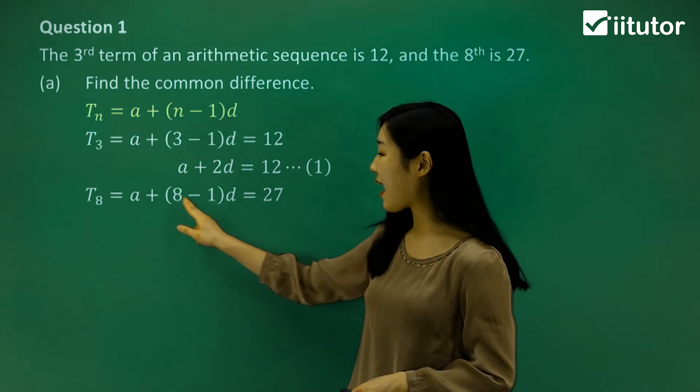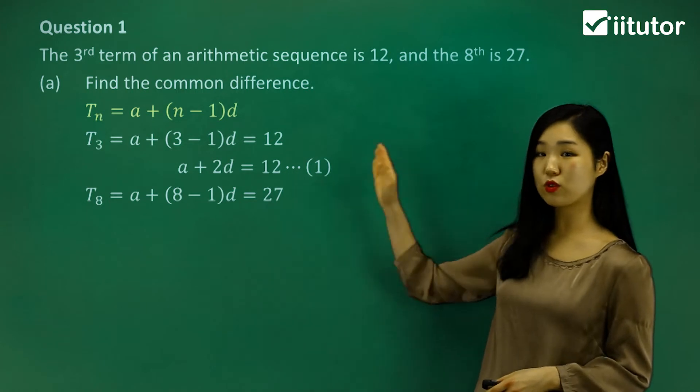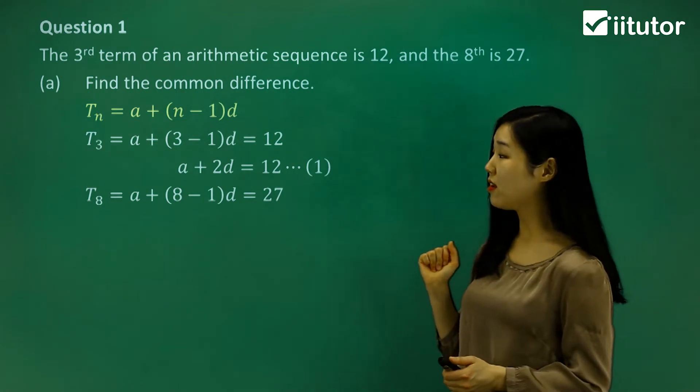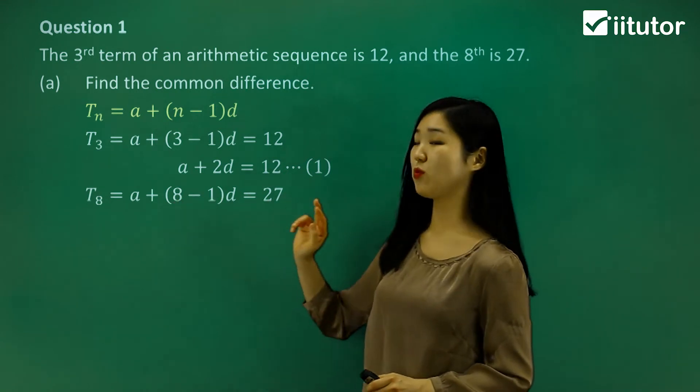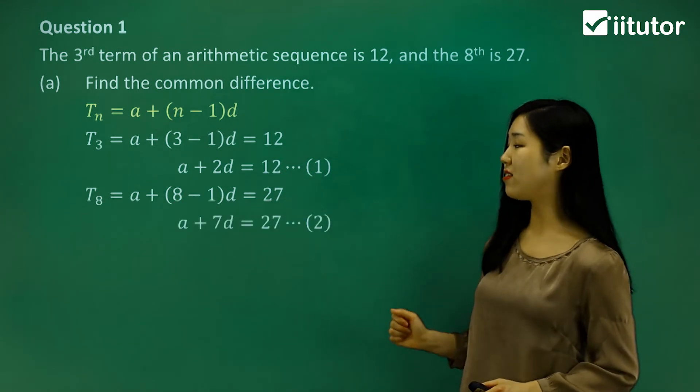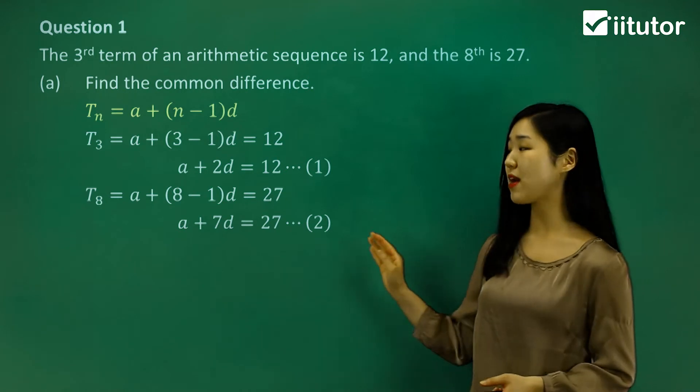So T8 will be a plus 8 minus 1 times d, and that's going to equal 27 as it tells us in the question. Again, a and d are unknown so far. Let's simplify: 8 minus 1 is 7, so a plus 7d equals 27, and I'm going to label that equation 2.